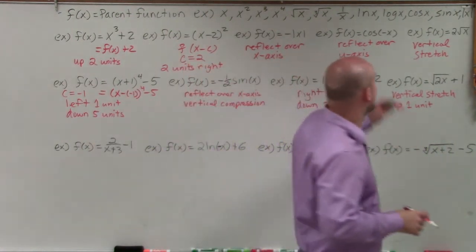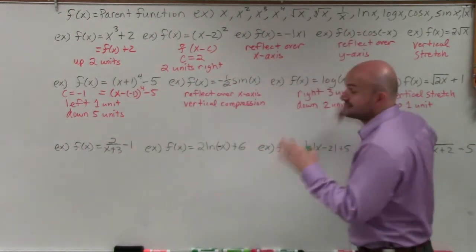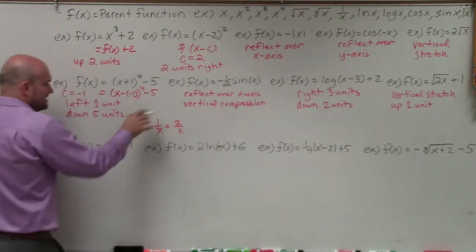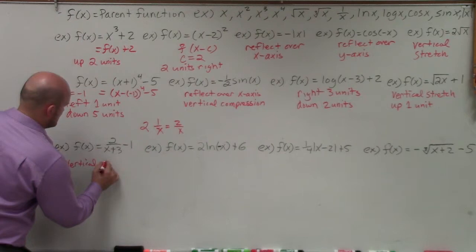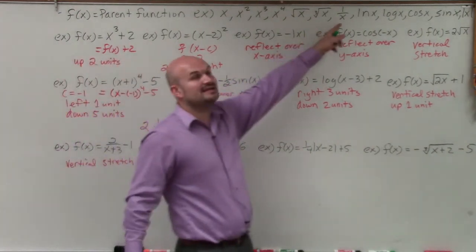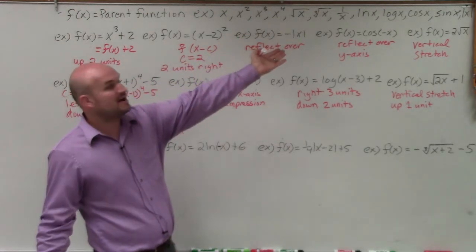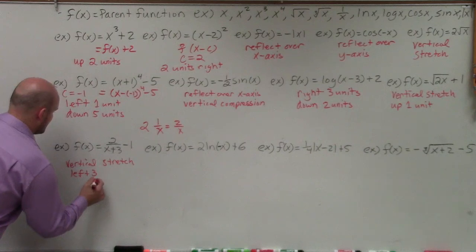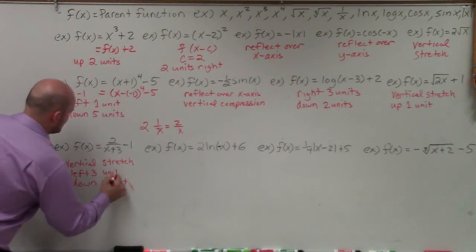Now my function is 1 over x. I have a 2 in the numerator, which means the function is multiplied by 2 outside — 2 times 1 over x equals 2 over x — so that's a vertical stretch. Then I have (x plus 3) in the denominator and minus 1 outside the fraction. Since the plus 3 is inside the function, and minus 1 is outside, that's left 3 units and down 1 unit.